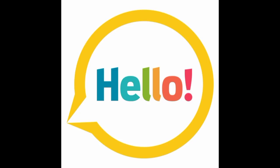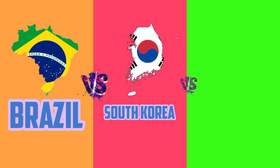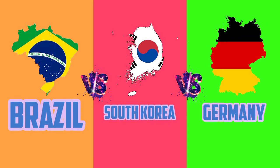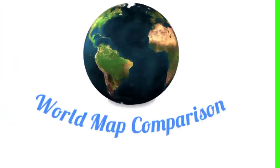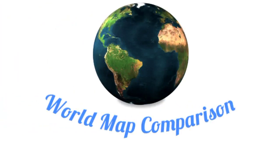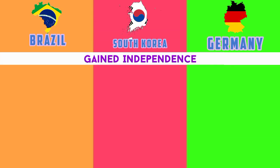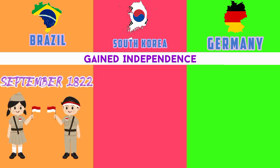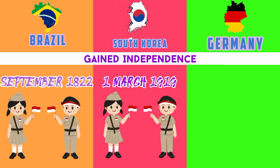Hello guys, today we compare Brazil versus South Korea versus Germany. Welcome to World Map Comparison YouTube channel. Brazil gained independence on the 7th of September 1822. South Korea on the 1st of March 1919.